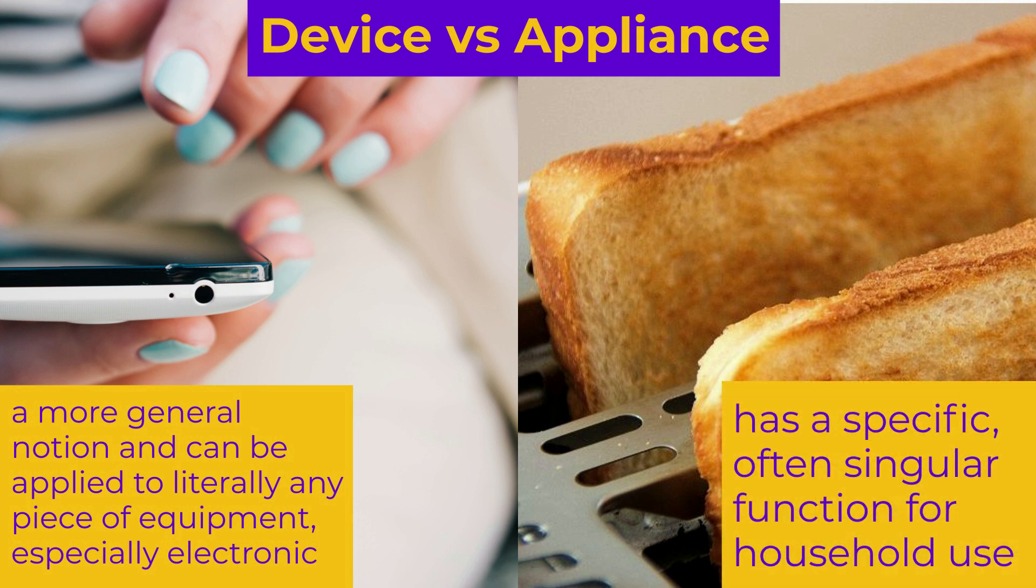An appliance is a device that has a specific, often singular function for household use. For example, a blender, a toaster, a hairdryer. So any appliance is a device but not any device is an appliance. A smartphone is not an appliance.